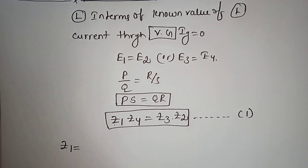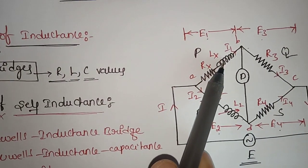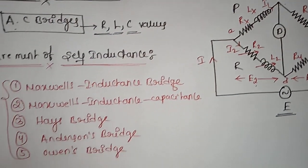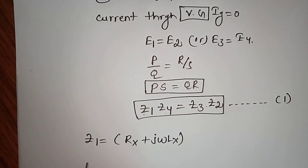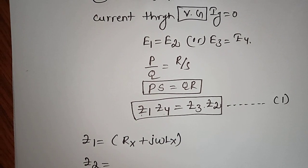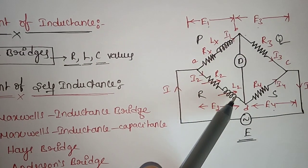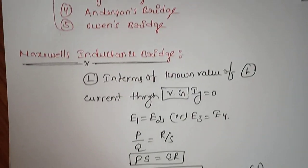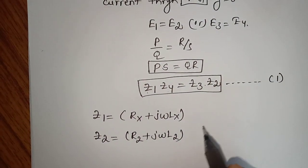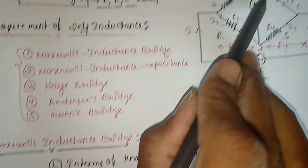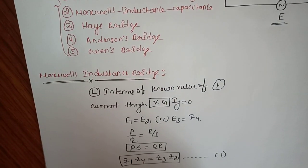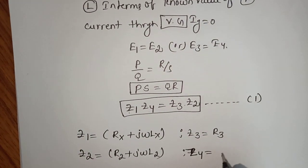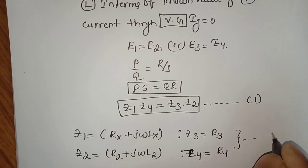Z1 is the impedance of arm 1. In arm 1 we have resistance and inductance, so Z1 equals Rx plus jωLx. Z2 is the impedance of arm 2, so Z2 equals R2 plus jωL2. In arm 3 there is no inductance, so Z3 equals R3. And Z4 equals R4. This is equation number 2.